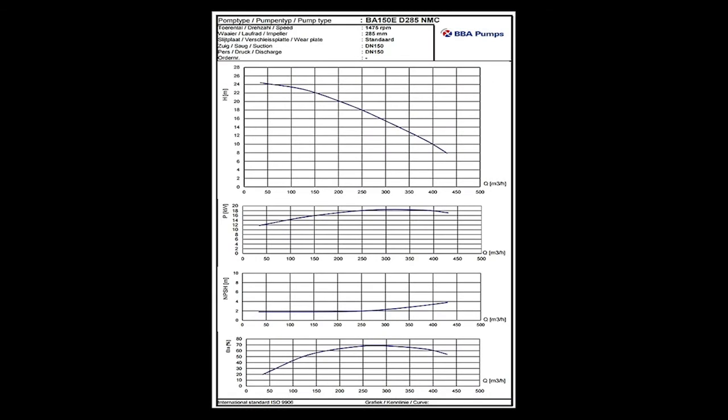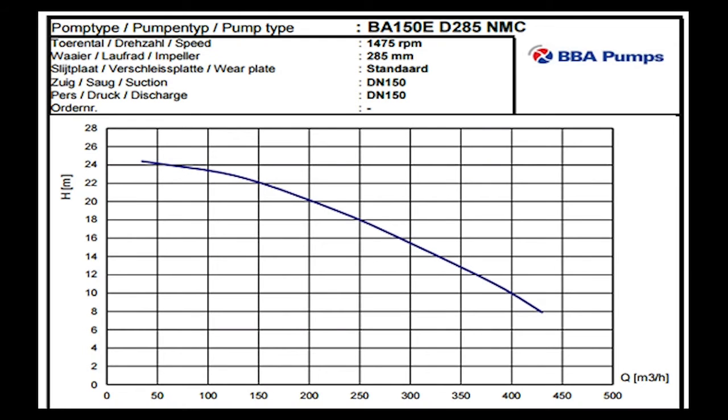A pump curve normally consists of four segments. The capacity is generally shown on the horizontal axis. Let's look at this example of a BBA pump BA150.